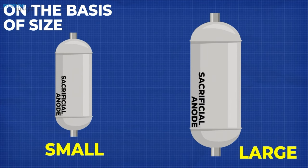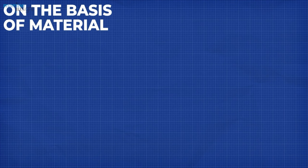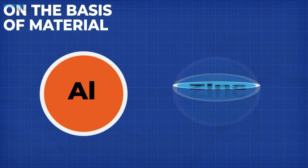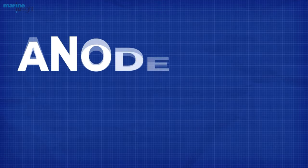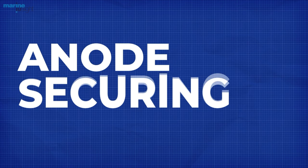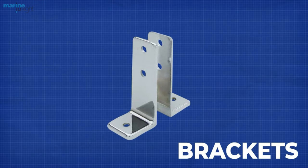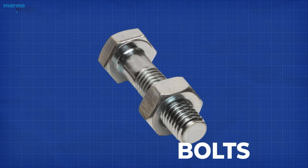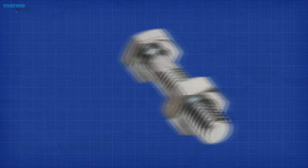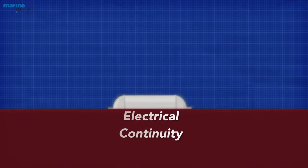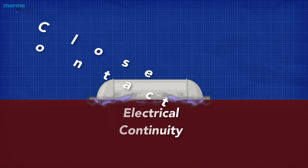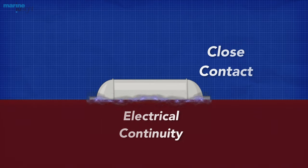On the basis of material, zinc anodes and aluminum anodes are preferred in the maritime industry. The anode can be secured or fitted to the surface of the ship to be protected by three common methods: by use of brackets, bolts and welds. Among these three methods, welding is the most efficient method, which can maintain maximum electrical continuity and remain in the closest contact with the parent surface.